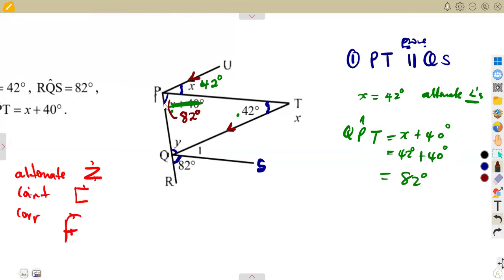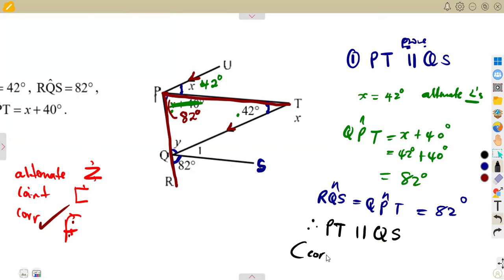There is something that is happening here. We are forming 82 degrees, 82 degrees, an F there. If you check properly, that's an F. We are forming an F. Angle of 82 here, angle of 82 here. So what does this tell us? These lines are parallel. Why? Corresponding angles. Angle RQS is equal to the angle Q, P, T that we calculated, which is 82 degrees. It cannot just happen like that. It means these two lines, they are parallel. PT is parallel to QS. We are talking of corresponding angles.